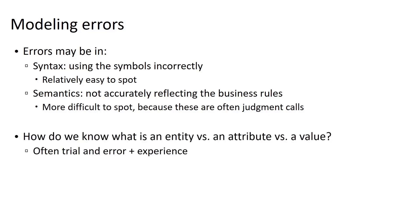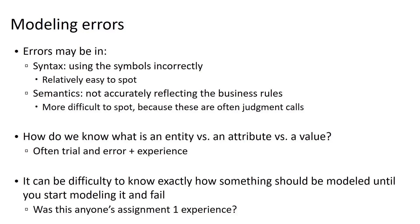For example, it can be a little difficult to understand if a particular object should be modeled as an entity or an attribute, or if it's a value or part of a relationship. This can be a bit of a trial and error process, and it's something that just becomes easier with experience. Sometimes it can be difficult to know exactly how something should be modeled until we start modeling it and experience some type of failure.